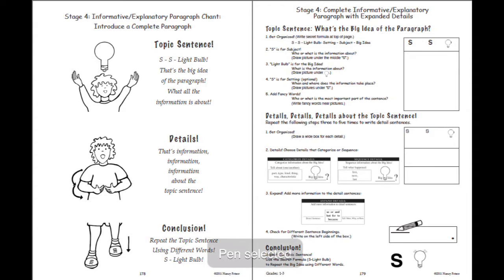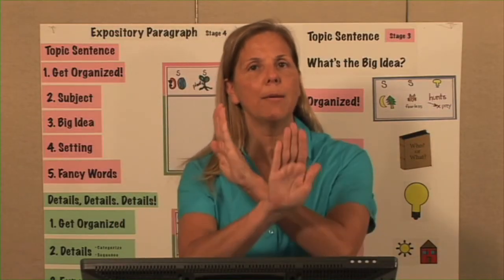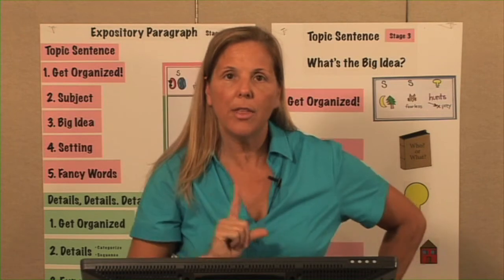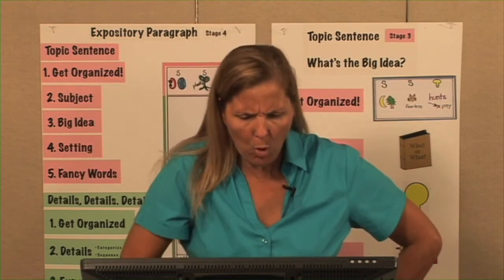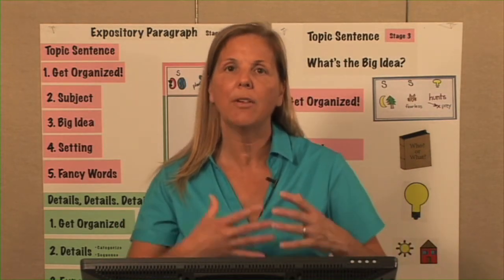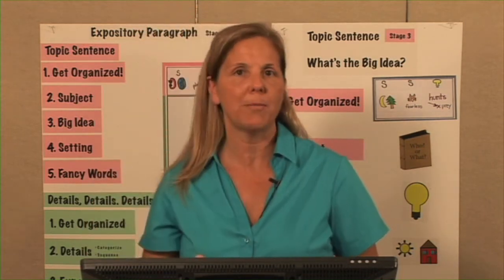Eventually for our chant, instead of saying SS light bulb, we'll leave that out and say: topic sentence — that's the big idea of the paragraph, what all the information is about. Then details, details, details — that's information, information, information about the topic sentence. Conclusion — repeat the topic sentence, use different words. When I do conclusion, I'm pointing back up to the topic sentence, reminding them they're just ending their topic with the big idea but using different words.